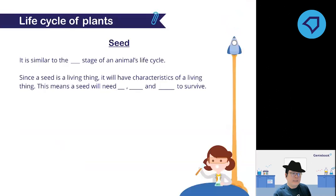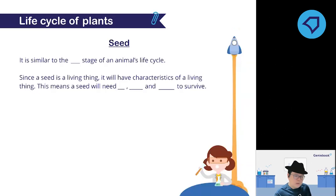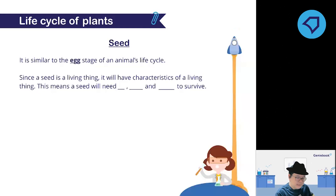Based on the video, there is a seed stage. Note: I'm not saying it begins with the seed stage — it's a cycle, so I have no idea where the starting point is. A seed is similar to the egg stage in the animal life cycle. A seed is a living thing — it can grow, reproduce as a plant, and respond to changes. To survive it needs air, food, and water.